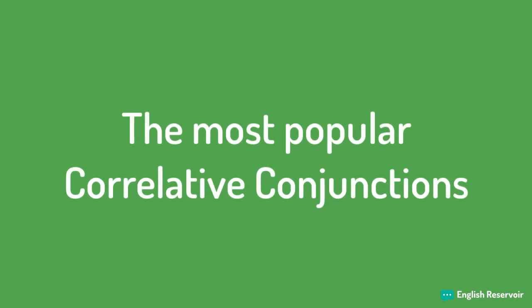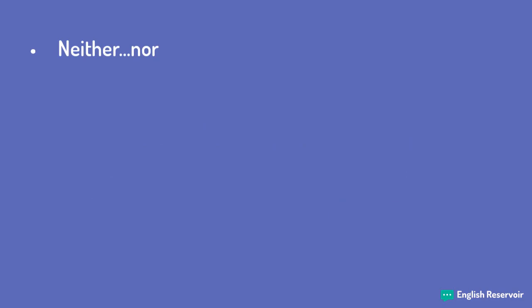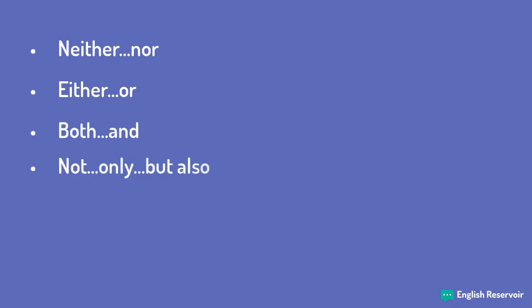In this lesson, we will learn the most popular correlative conjunctions in English. We will cover all of them in order, so if you only want to learn a specific one, then just use the timestamps in the description of this video to find exactly what you need.